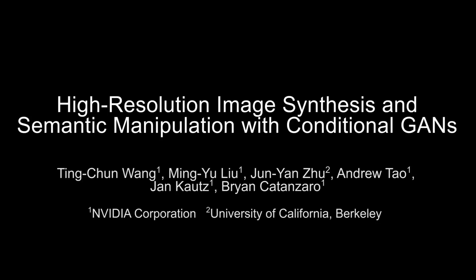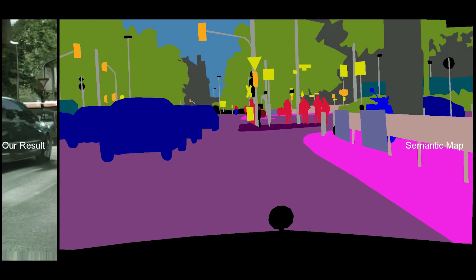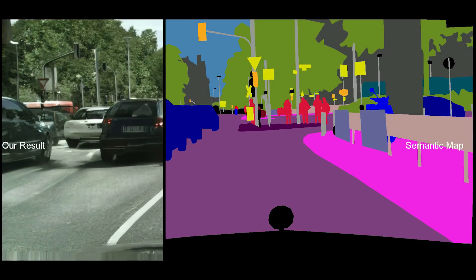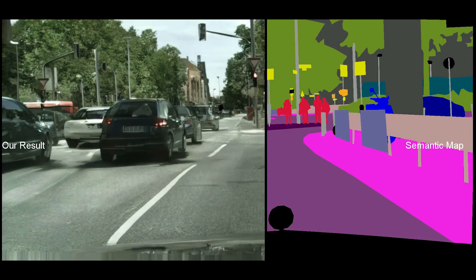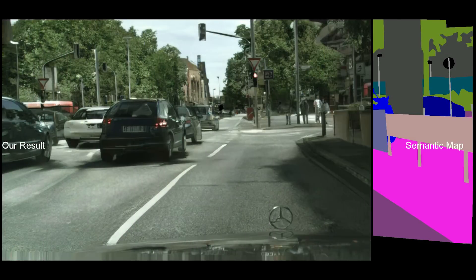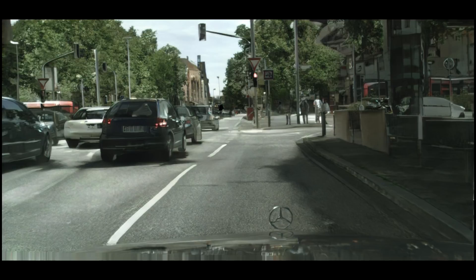Rendering photorealistic images using a standard graphics pipeline is complex. What if we could render images with a generative network instead, starting with high-level labels that are much easier to create and edit? We present a generative adversarial framework for synthesizing 2K photorealistic images.